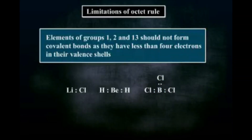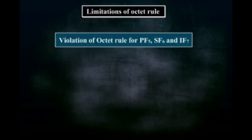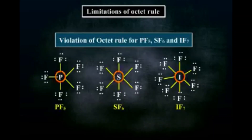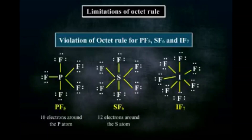The second limitation involves a violation in molecules like PF₅, SF₆, and IF₇. In all these molecules, the central atom has more than eight electrons in their valence shells. Phosphorus has 10 electrons, sulfur has 12, and iodine has 14 electrons around it.